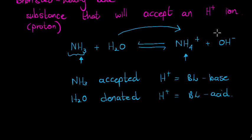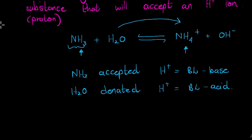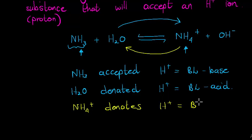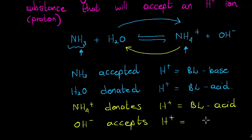This is a reversible reaction. If we go in reverse, NH₄⁺ has four hydrogens and in the reverse reaction it donates an H⁺ to the hydroxide ion to produce the water molecule, making NH₄⁺ a Bronsted-Lowry acid in the reverse reaction. Meanwhile, hydroxide (OH⁻) accepts an H⁺ in the reverse reaction, making it a Bronsted-Lowry base.